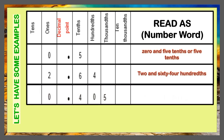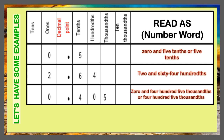The third example has a digit 0 in the 1's place, 4 in the tenths place, 0 in the hundredths place, 5 in the thousandths place. This number reads as 0 and 405 thousandths, or simply 405 thousandths.